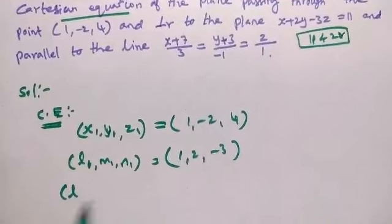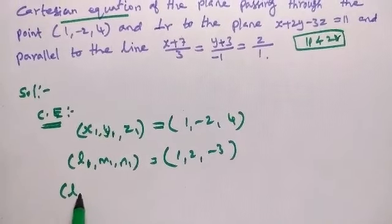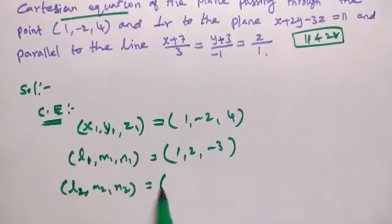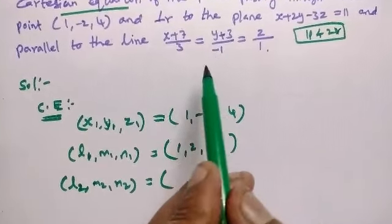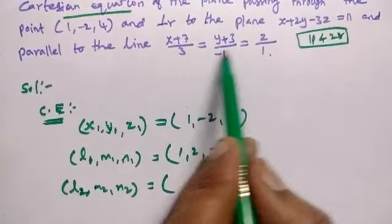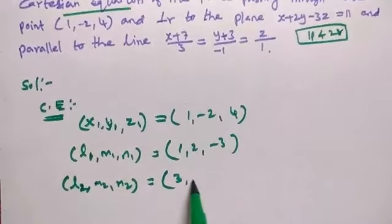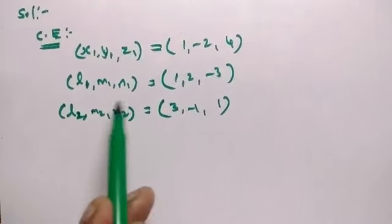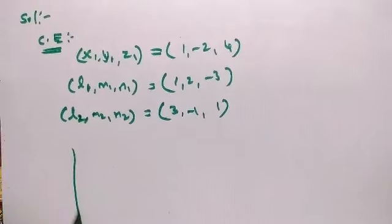So that we have parallel here on the line L2, M2, N2 on the parallel line, on the given plane parallel line will be there, on the direction ratio 3, -1, 1. So this is the Cartesian equation.